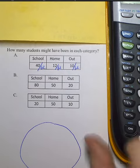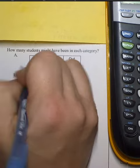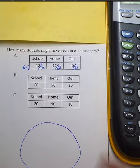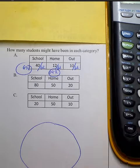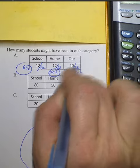And now I'm going to figure out the percentage. So 40 divided by 62 is approximately 65%. And 12 divided by 62 is approximately 19%. 10 divided by 62 is approximately 16%.